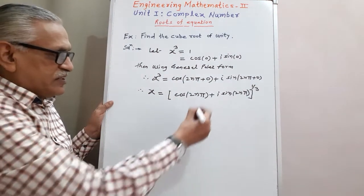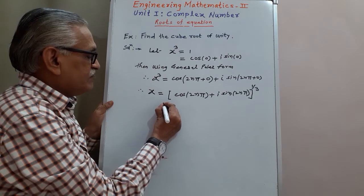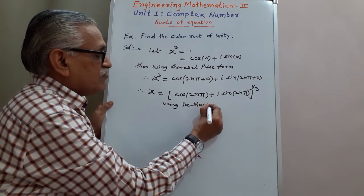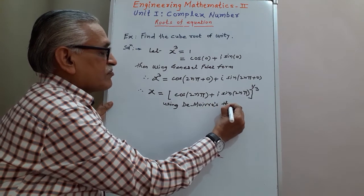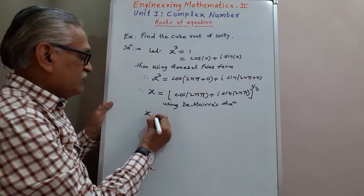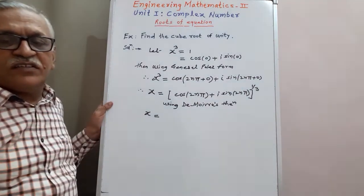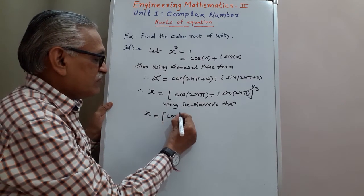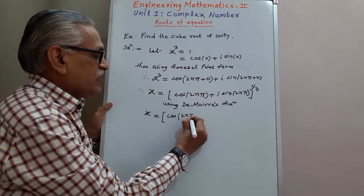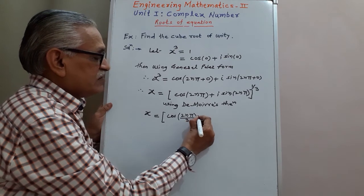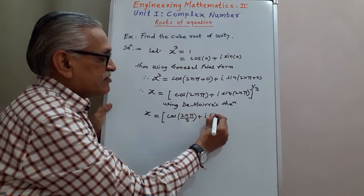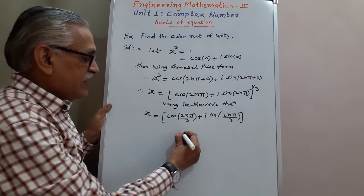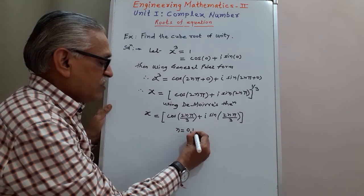Applying De Moivre's theorem — since cos θ + i sin θ raised to n equals cos nθ + i sin nθ — we get x is equal to cos(2nπ/3) plus i sine(2nπ/3), where n is equal to 0, 1, 2.